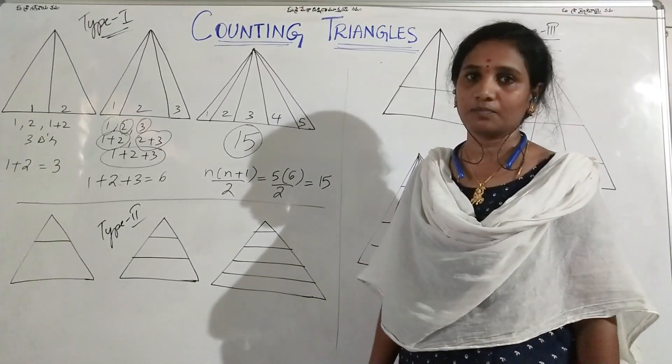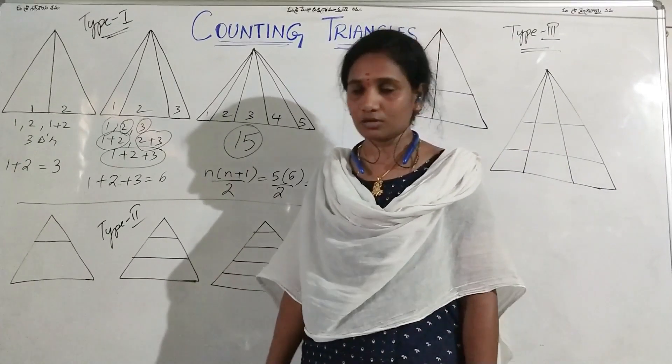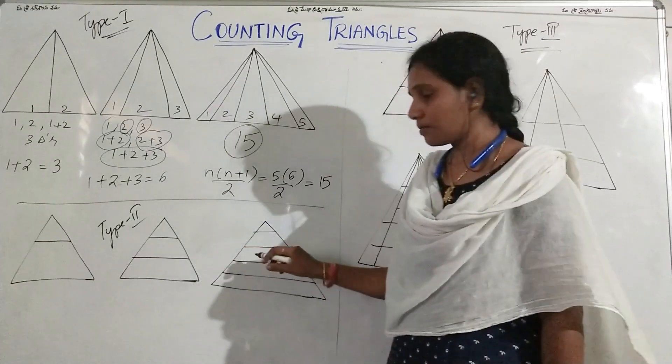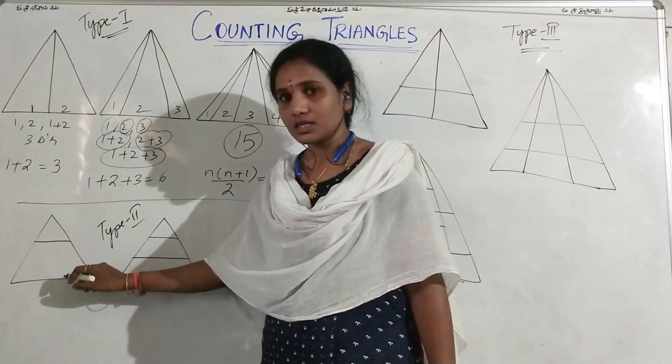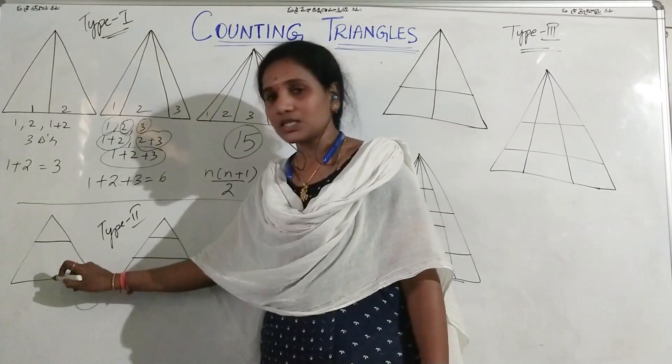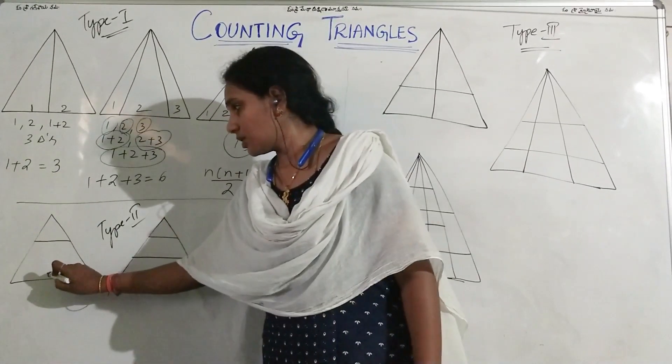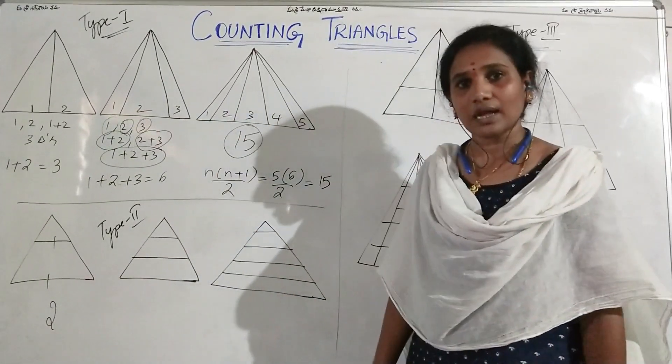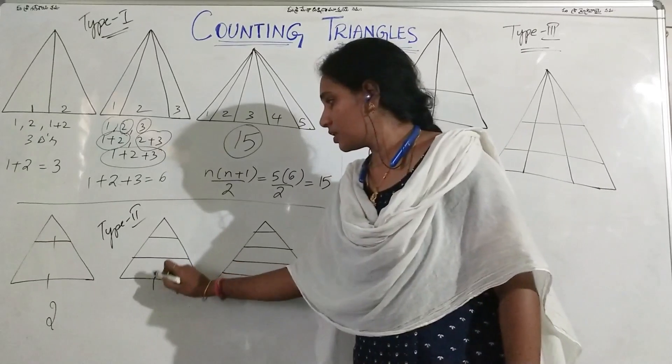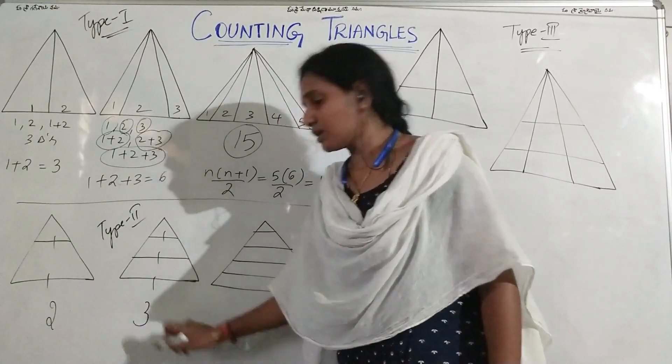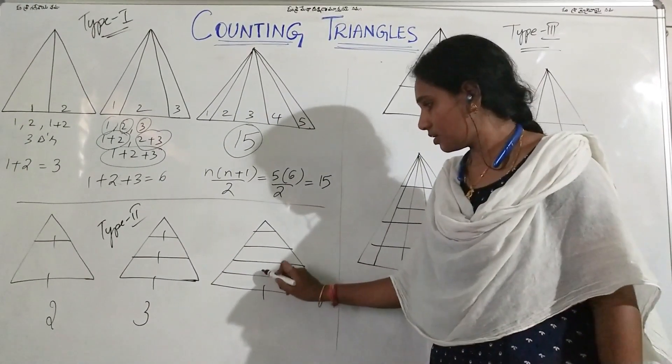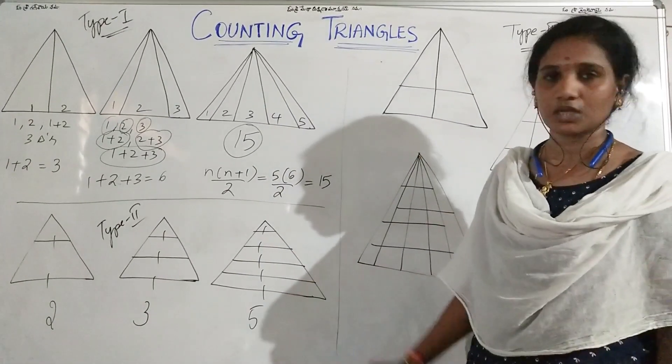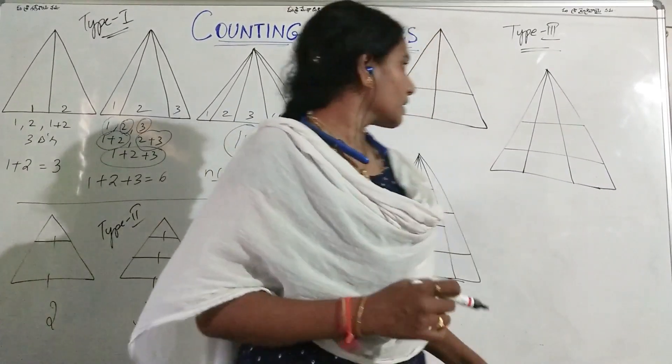Now let us go to Type 2 model questions. Here if you observe, only the lines are parallel to the base. So here in this type of figure, just you need to count how many bases. So here it is 2, so only 2 triangles can be formed. Here it is 3, so only 3 triangles are formed. Here it is 5, so 5 triangles are formed.